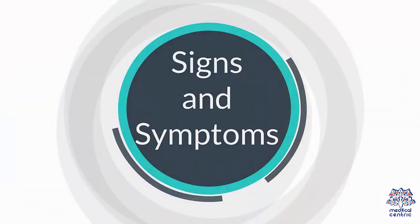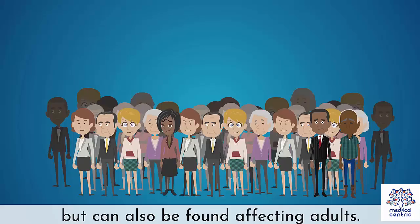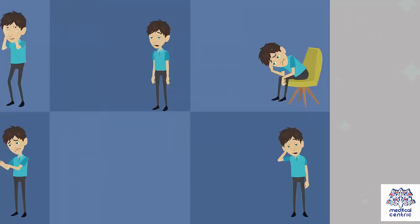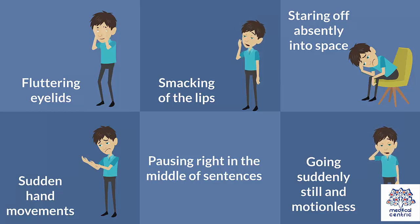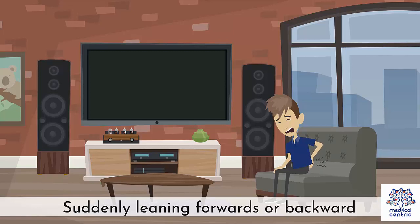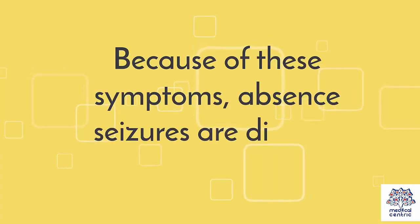Signs and Symptoms. Absence seizures usually affect children of ages 5 to 9, but can also be found affecting adults. The short time they last for can lead to the following symptoms: fluttering eyelids, smacking of the lips, staring off absently into space, sudden hand movements, pausing right in the middle of sentences, going suddenly still and motionless, and suddenly leaning forwards or backward. Because of these symptoms, absence seizures are difficult to point out.